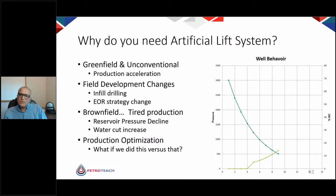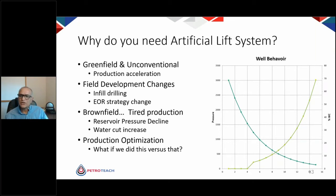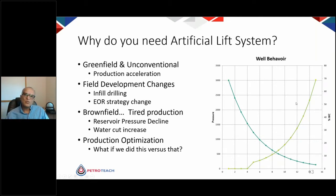Why do you need an artificial lift system? Production acceleration is one reason, but you also have to look at natural factors like reservoir pressure decline as a brownfield matures, increasing water cut, and gas cap exertion. Essentially, your productivity declines, and if your objective is maintaining production at a certain level, that is where you look to artificial lift. As you go for infill drilling and implement enhanced oil recovery strategies, you also often have to deploy artificial lift. Overall, whenever you want to do production optimization, you need artificial lift.